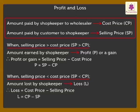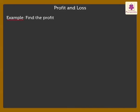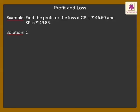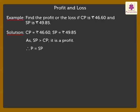Now let's solve a few examples to understand it in a better way. Find the profit or the loss if cost price is 46.60 rupees and selling price is 49.85 rupees. Here, selling price is greater than the cost price. Thus, it is a profit. Profit is equal to selling price minus cost price, which is equal to 3.25 rupees.